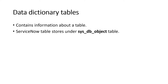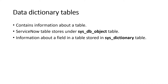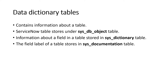There are three key data dictionary tables. First, sys_db_object stores information about all tables — all 4,479 tables like incident and change are stored here. Second, sys_dictionary stores information about fields — their types like integer or string, and their choice values like the options under Category. Third, sys_documentation stores the labels of tables, their plural values, and other label-related information.